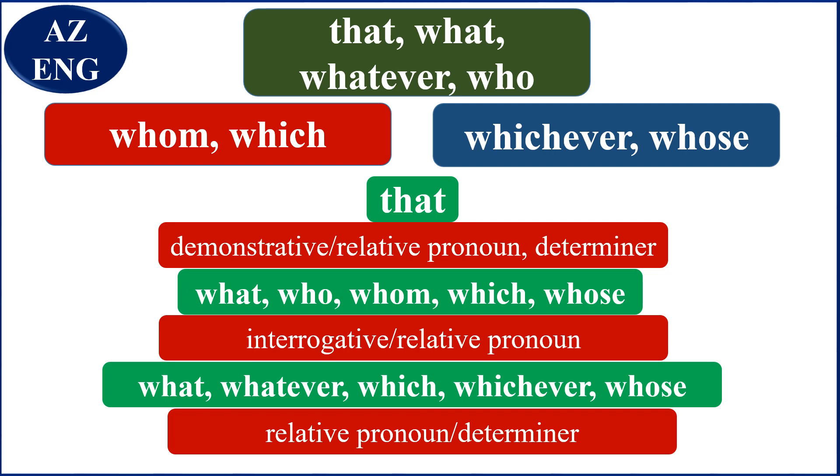What already functions as relative, but here you see is another group. So here, whatever can be relative, which, the same thing, whichever and whose. Then what, whatever, which, whichever, whose—they can function as what? A determiner.